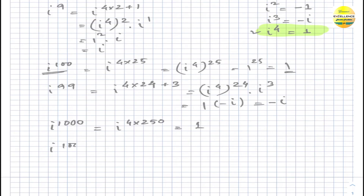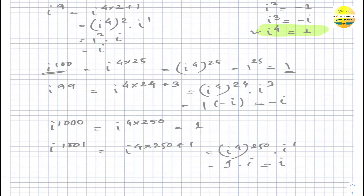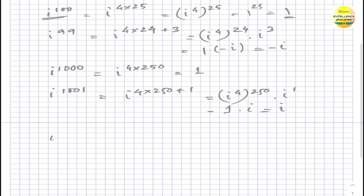i to the power 1001 can be written as i to the power (4×250 plus 1). The first part equals one, times i to the power one, which is i. So finally i to the power 1001 equals i.